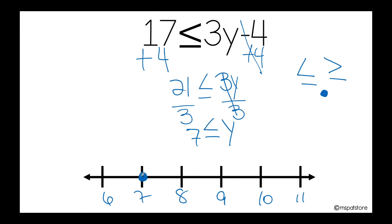Now you need to stop and analyze what the solution is telling you — it's saying that my variable could be any number greater than or equal to positive 7.